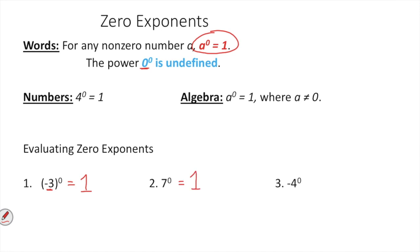Now, this is the tricky one, because the negative is not in parentheses. So, based on order of operations, we must do the power first, so four to the zero is equal to one, and then the opposite of that would equal a negative one. So, notice the difference between number three and number one there.